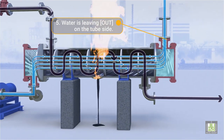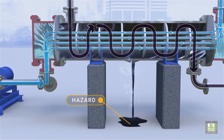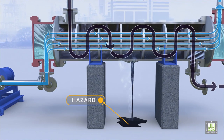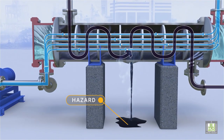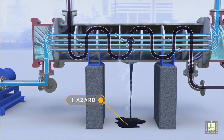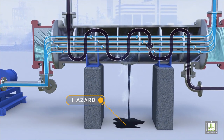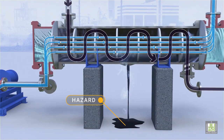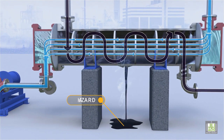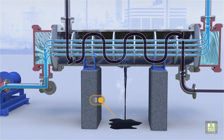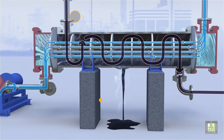The heat exchanger is typically provided with low or high point vents to remove water from tubes or the shell. Uncontrolled mixing of water with hydrocarbons can generate high-pressure conditions and can damage systems that are not equipped with pressure-relief devices.